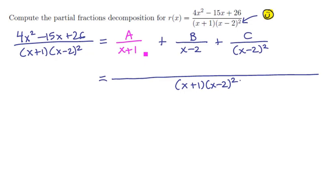The first term, to get on the common denominator, will require an x minus 2 squared. It already has the x plus 1, so it contributes a times x minus 2 quantity squared. The second term will require an x plus 1 and an additional x minus 2, so it's going to contribute b times x plus 1 times x minus 2.